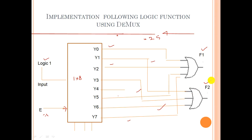Any Boolean expression can be implemented with combinational circuits — whether full adder, half adder, subtractor, encoder, decoder, demux, or mux — they are all interconnected. Similarly, you can design a half adder or full adder using a demux by finding the minterms of the Boolean expressions, then connecting those outputs accordingly. If you know the Boolean expression, find the minterms and map them to the demux outputs.